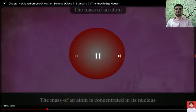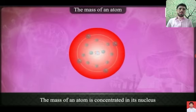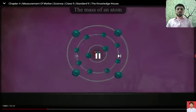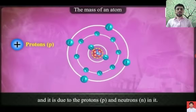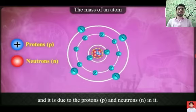Now we will move towards our next point, which is the mass of an atom. The mass of an atom is completely concentrated in its nucleus. If we want to calculate the mass of an atom, we have to focus on its nucleus. The mass of an atom is due to its protons and neutrons which are present inside the nucleus.